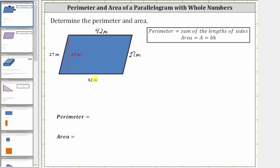And now let's determine the perimeter. The perimeter is the sum of the lengths of the sides because the perimeter is the distance around the outside of the parallelogram. If we think of walking around the parallelogram, the perimeter is equal to 27 meters plus 42 meters plus 27 meters plus 42 meters.